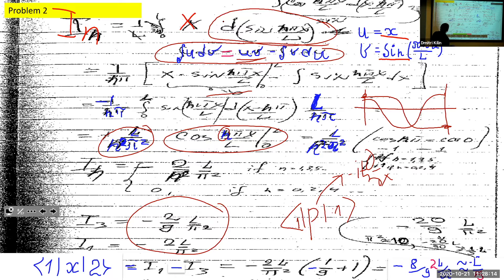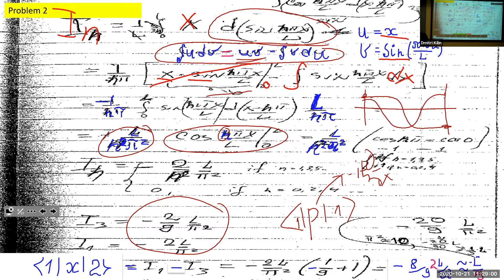There are no table integrals of x times sine readily available, so applying integration by parts gives: x times sine, minus the integral of sine dx. Evaluating at the boundaries: at x=0 the product is zero, and at x=L the sine is zero, so the first term vanishes. The remaining term is just the integral of sine. Taking care of the constants up front, we get L over n squared over π squared.